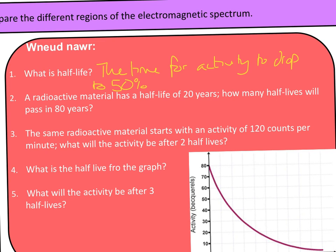If the half-life is 20 years, we go from 0 to 20, 20 to 40, 40 to 60, and then 60 to 80. Counting those half-lives: one, two, three, four — there are four half-lives in 80 years.